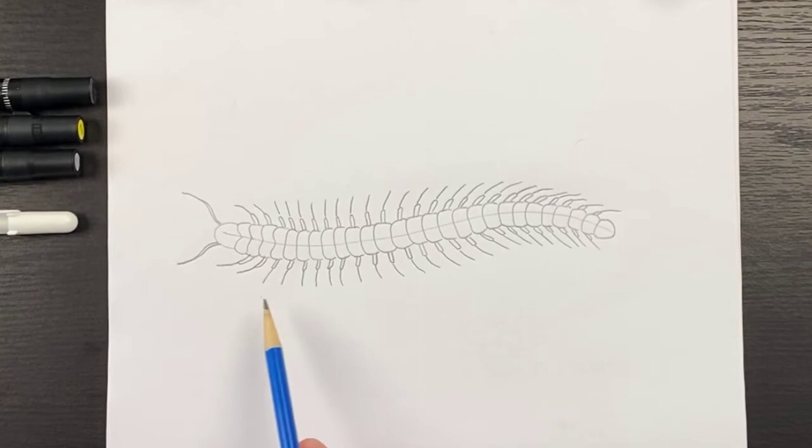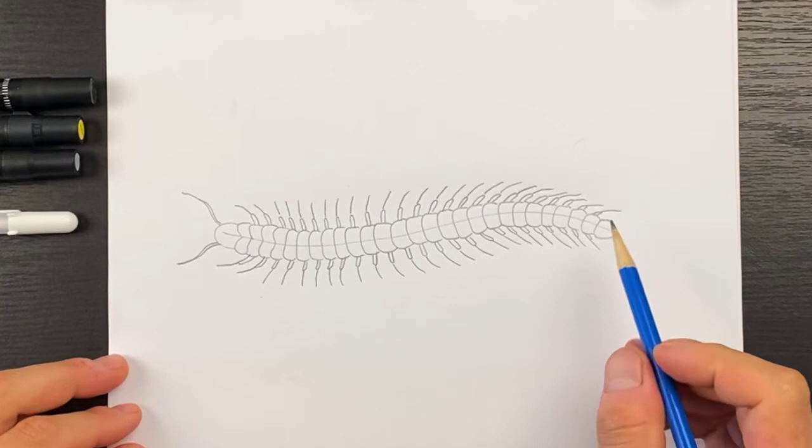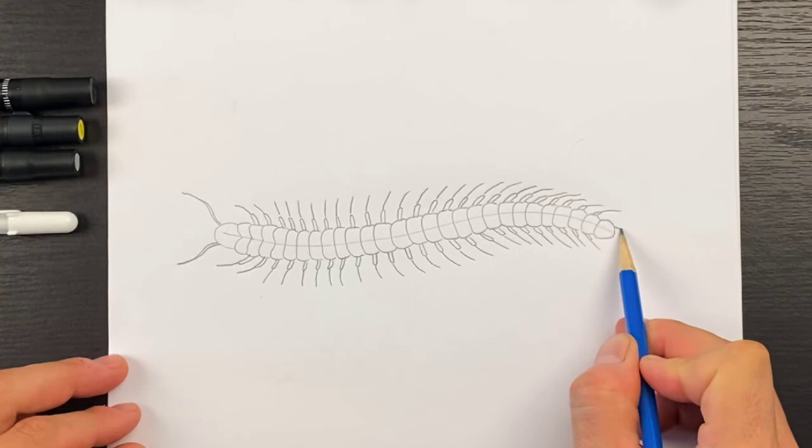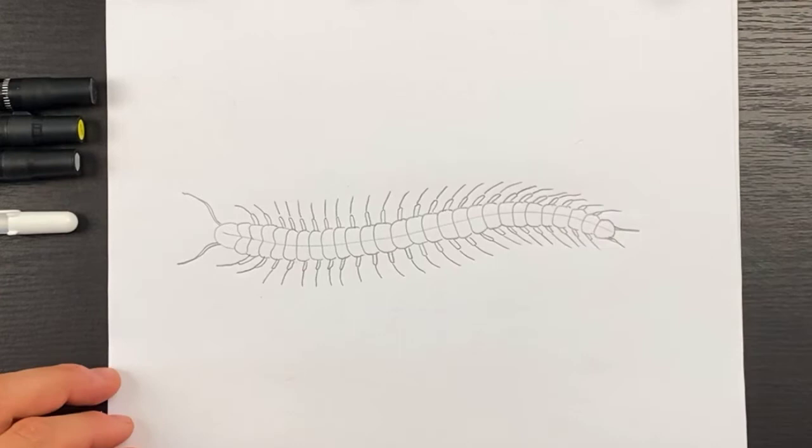All right, now that we finished the extensions off of those, the last thing to do is we'll add kind of like these two tail shapes here, little spikes at the back. Just like one there, and one there. And that's it, there is our centipede.